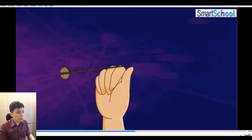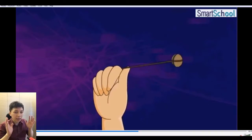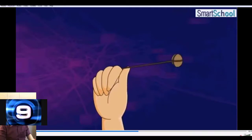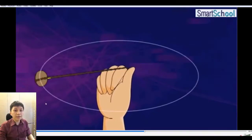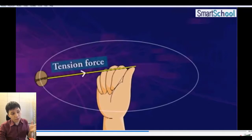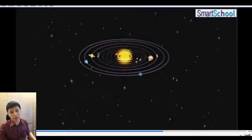Another example would be using a string connected with an object — it could be a ball — and you swing it. What is the actual force acting as the centripetal force? The answer is tension, because without the tension, the ball would just go straight according to the direction of the tangential velocity.